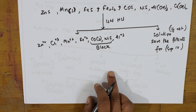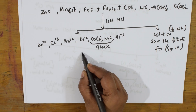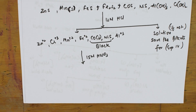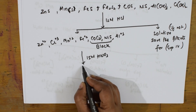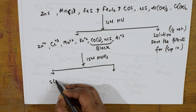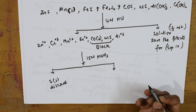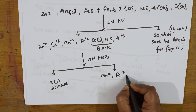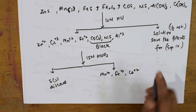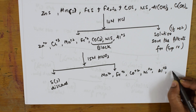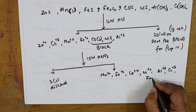Take the precipitate and introduce 15M HNO₃ to it. What happens is that sulfur (S) is released — you can discard it. What remains in solution is the cations: Mn²⁺, Fe²⁺, Co²⁺, Ni²⁺, Al³⁺, Cr³⁺, and Zn²⁺.